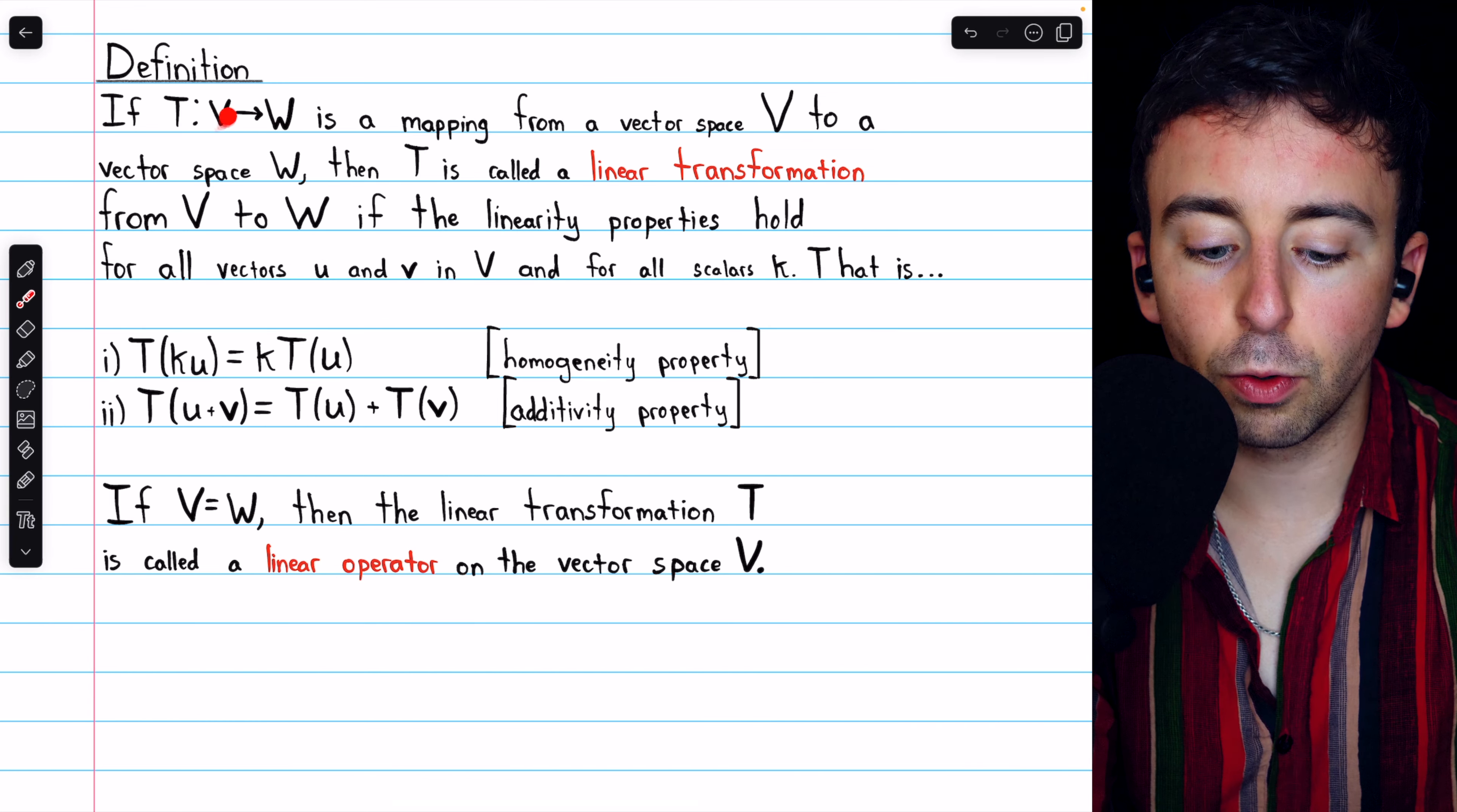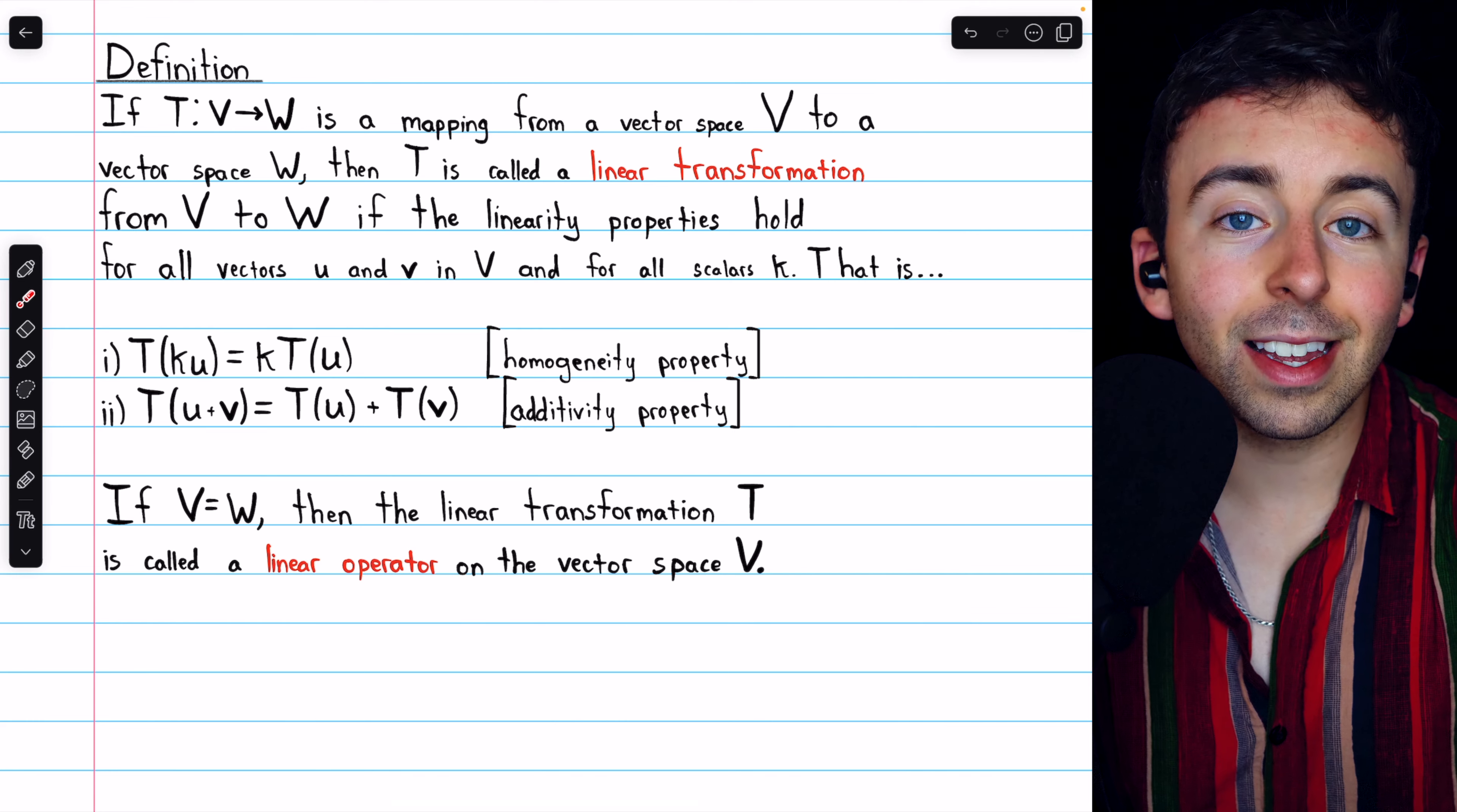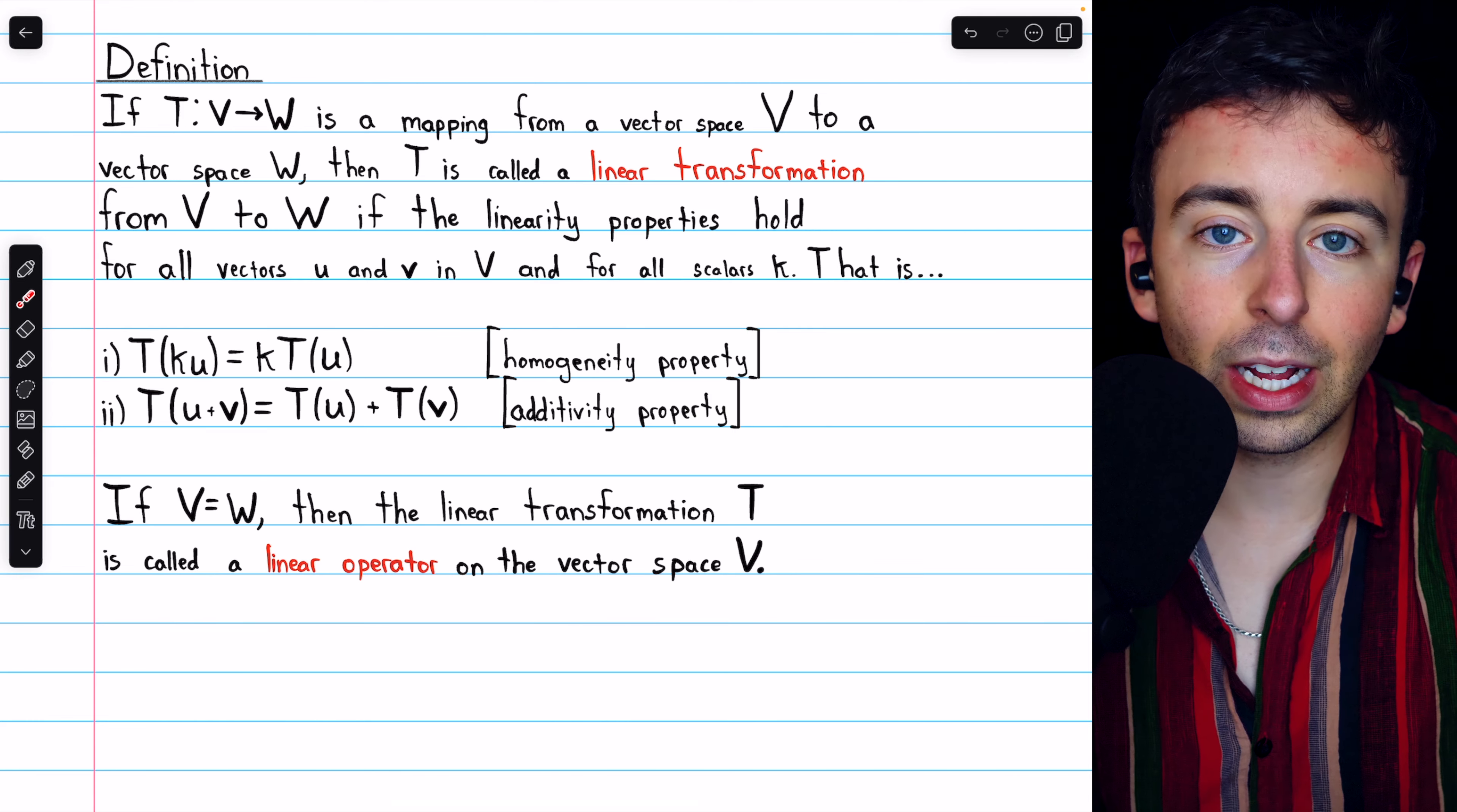If T is a function from a vector space V to a vector space W that satisfies the linearity properties, then we say that T is a linear transformation.